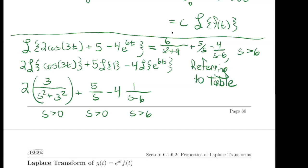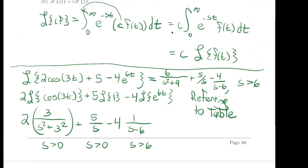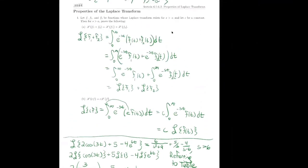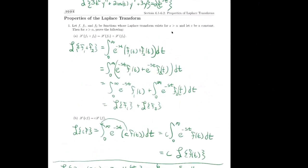These are two properties that, though this is not a proof-writing class, you certainly can justify. So be sure you're keeping mindful: if you were asked to prove or justify these things, could you do it using the definition?